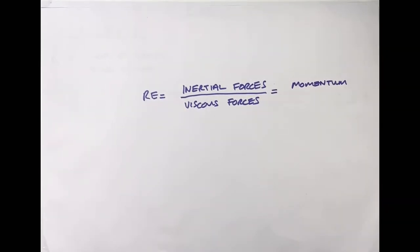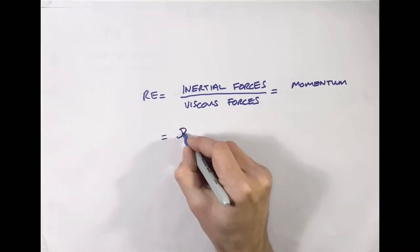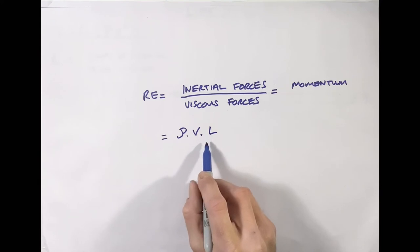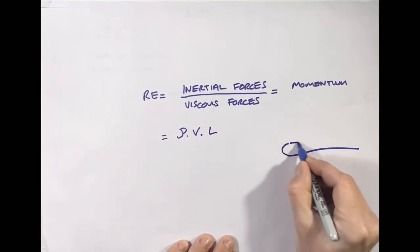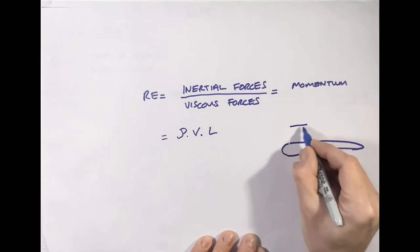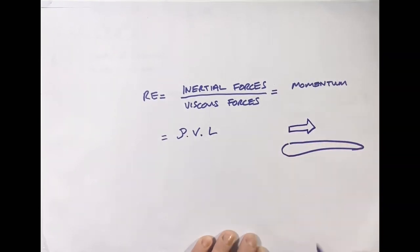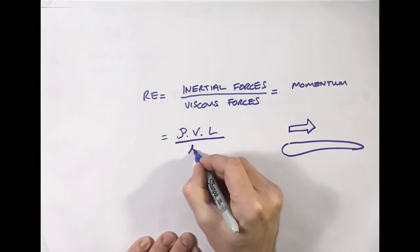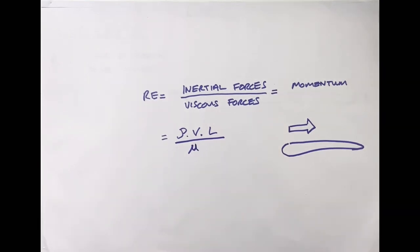Looking at how this translates to the equation: the inertial forces are calculated by density times velocity times the length of the aerofoil. Like the large heavy lorry moving very fast with a lot of momentum, very thick dense air travelling fast has a lot of momentum. Countering this are the viscous forces, represented in the equation simply by dynamic viscosity.